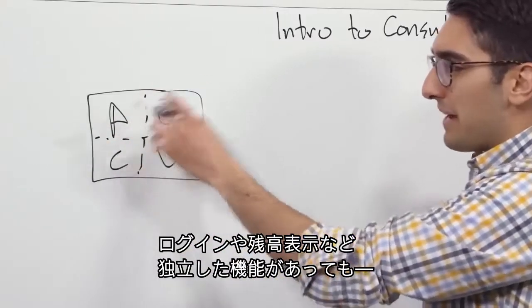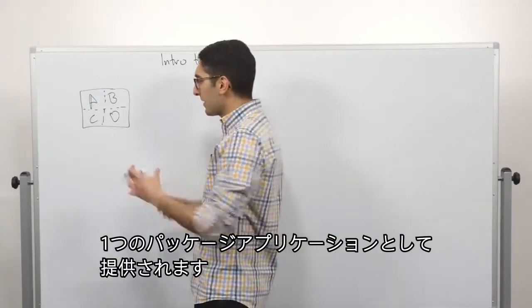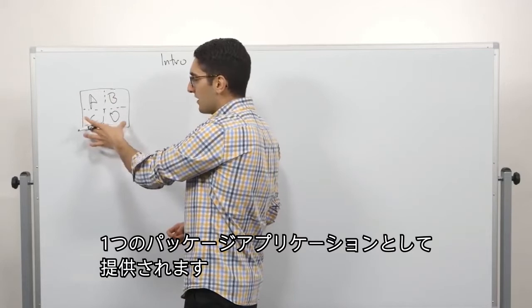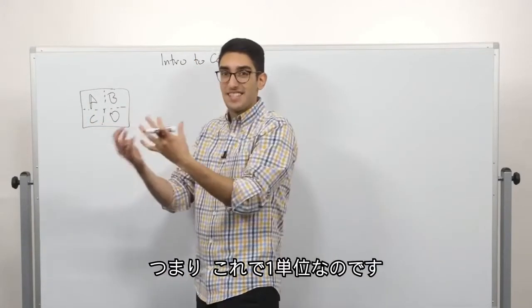Now, even though these are independent functions, logging in versus showing our balance, we're delivering it and packaging our application as a single monolithic app. So we're deploying it as a single unit.